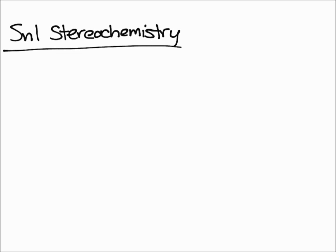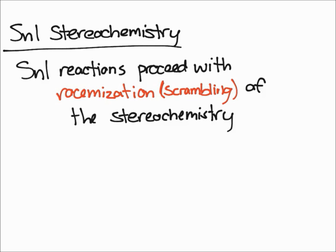In this video, I'm going to talk about the stereochemistry associated with SN1 reactions. SN1 reactions proceed with racemization, which is also known as scrambling of the stereochemistry.